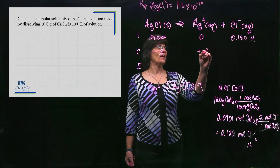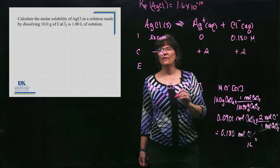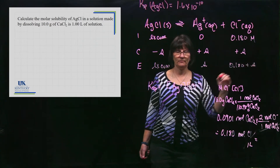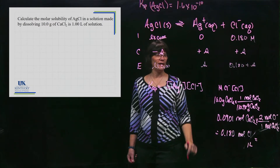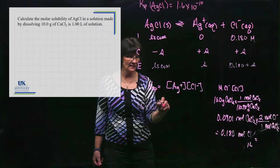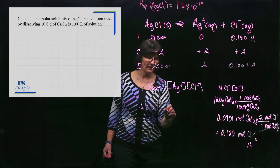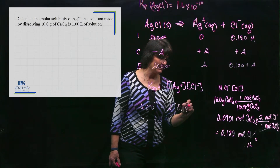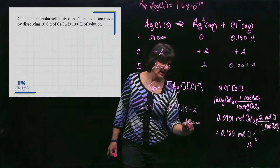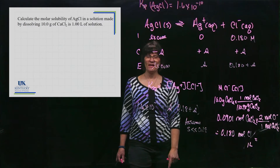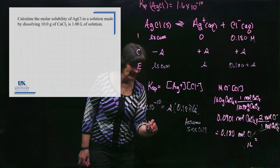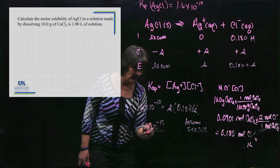Now we fill in the change line. Some of this dissolves — that is the molar solubility s. I produce s for Ag⁺ and s for Cl⁻. So the equilibrium concentrations are s for Ag⁺ and 0.180 + s for Cl⁻. Plugging into the Ksp expression: 1.6×10⁻¹⁰ = s × (0.18 + s). We assume s is much much smaller than 0.18 — that makes sense given the very small K value — so we ignore that term: 1.6×10⁻¹⁰ = s × 0.18.